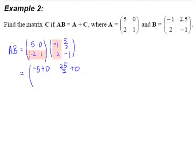Moving to the next row, first column: 2 times negative 1 gives negative 2, plus 1 times 2 gives us 2. Next column: 2 times 5 over 2 gives us 5, and 1 times negative 1 gives us negative 1.